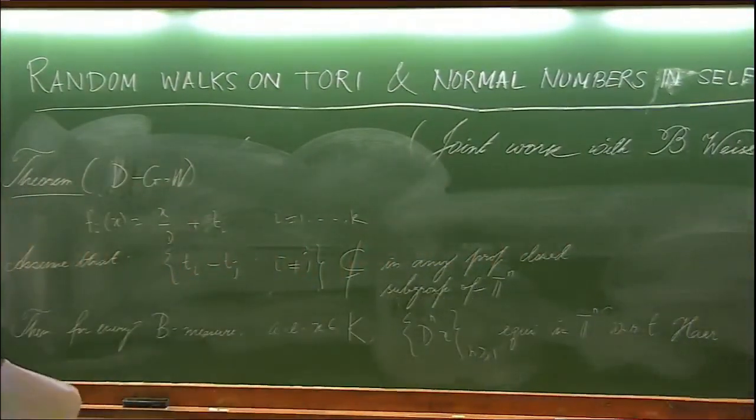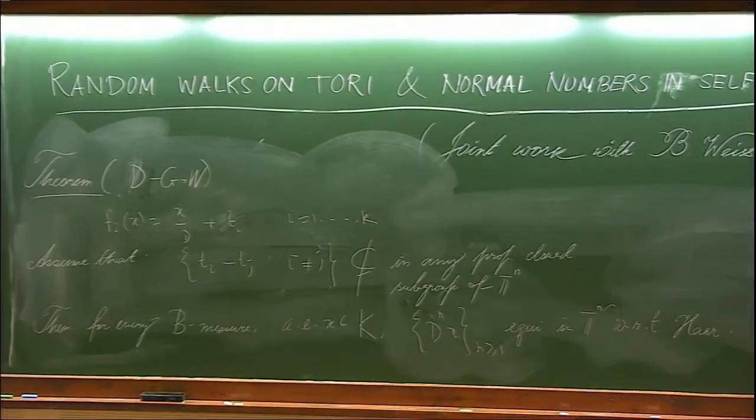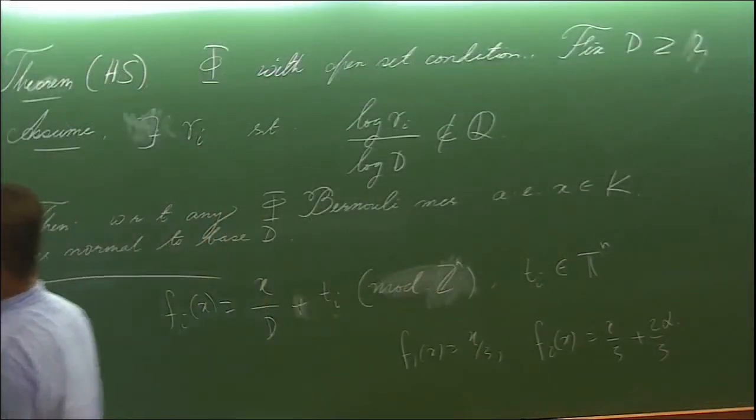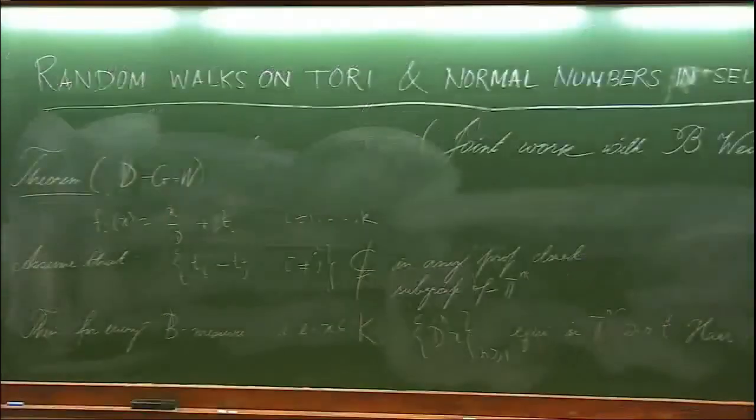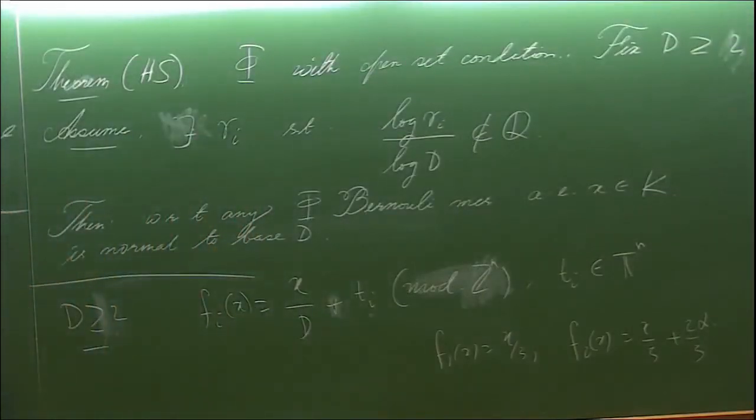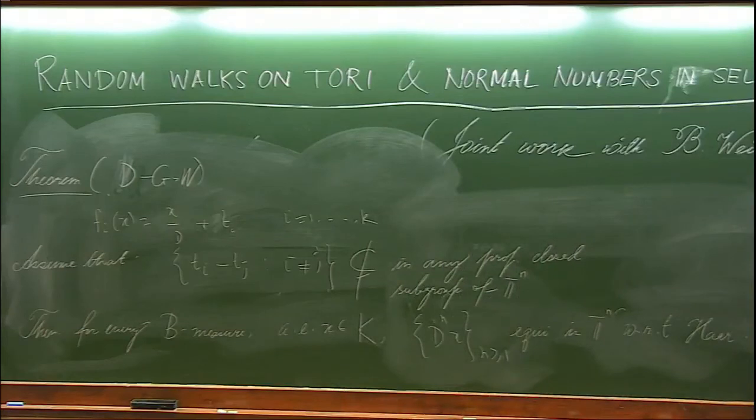I want to make the following remarks. First of all, all the earlier results, there the condition was put on the contraction ratios, but in this case, the condition that we are putting is on the translation part. For example, you can see that while the previous theorems were unable to provide information about the normality of a typical point in the dilation of the standard Cantor set by some irrational number alpha, all the previous results were unable to provide any information on that. But in view of our theorem, it follows that with respect to any Bernoulli measure, almost every point becomes normal to any base.